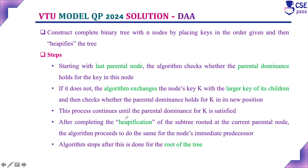Next, we need to construct the bottom-up heap for the given list. Before constructing the bottom-up heap, we need to understand the steps. First, construct a complete binary tree with n nodes by placing keys in order — for the given list, fill key elements from left to right starting from the root node. Then, implement the heapification process on that tree.